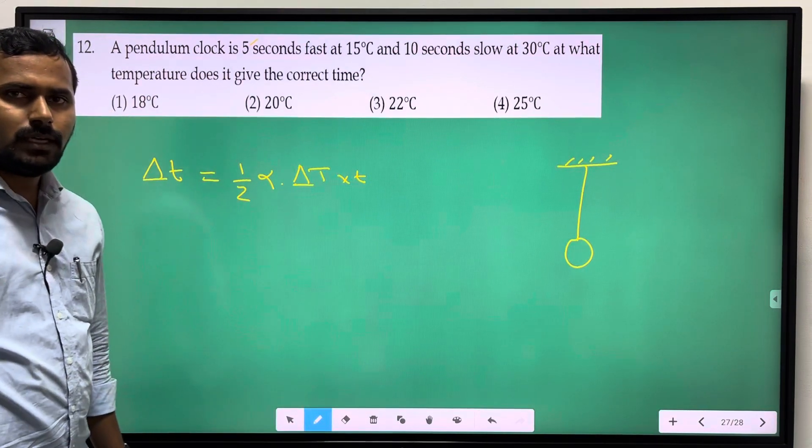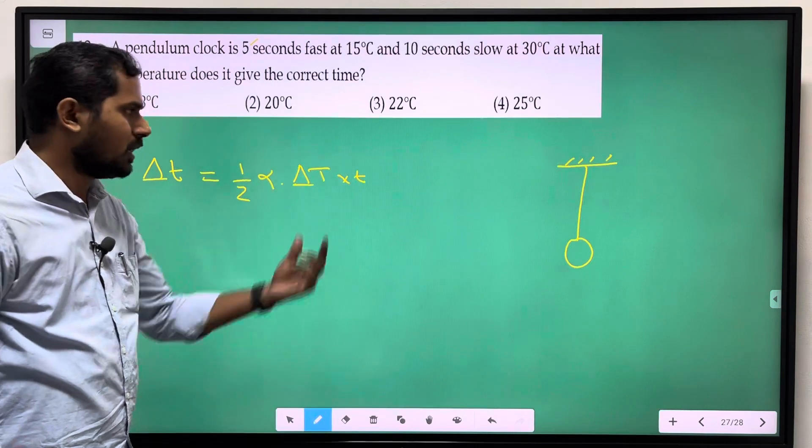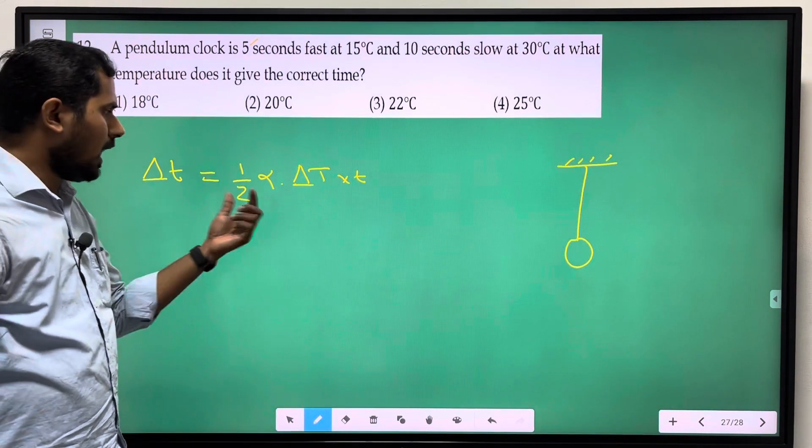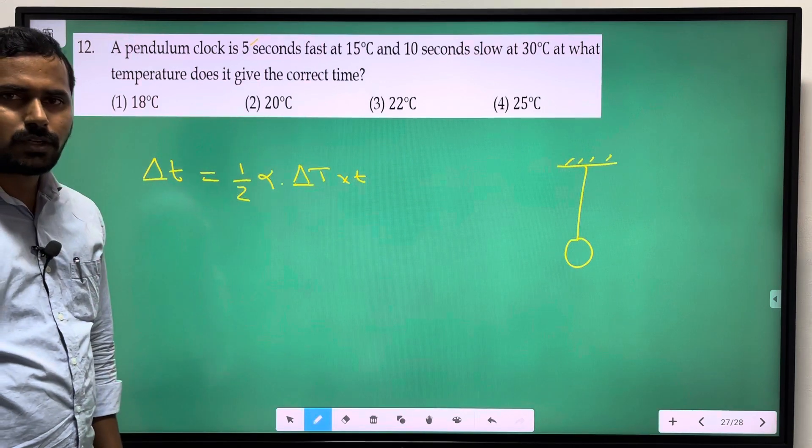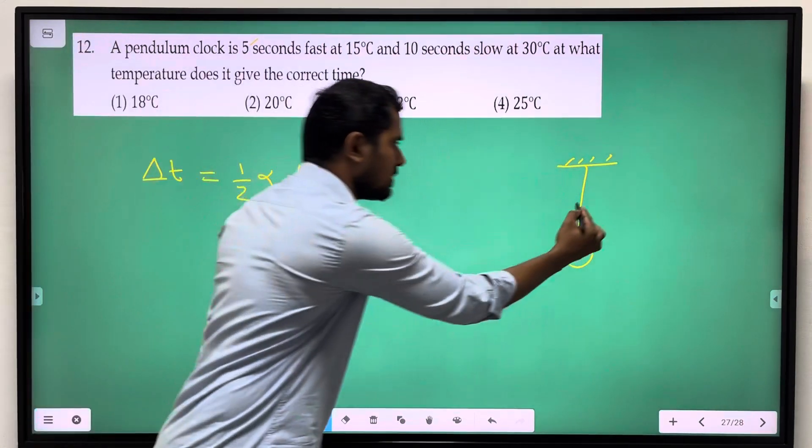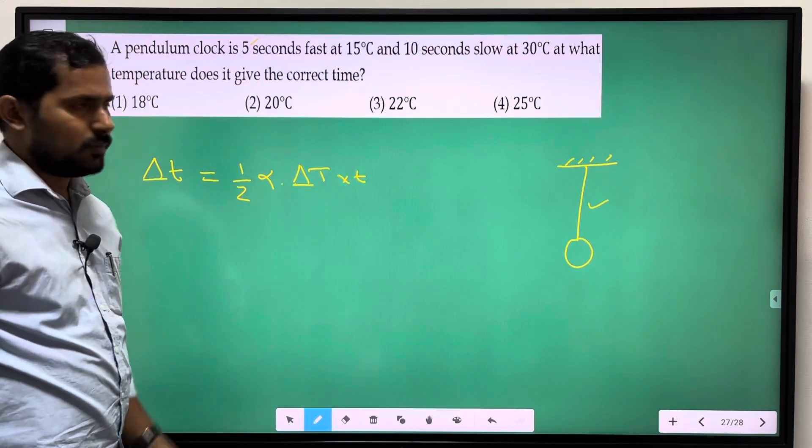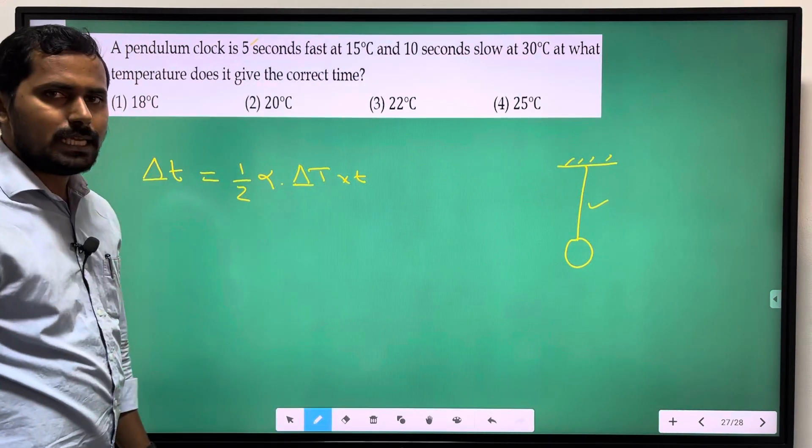Per day, 24 into 60 into 60 we will use. Alpha, coefficient of linear expansion of this string. It is equal to 1 by 2 alpha. First situation equation form.